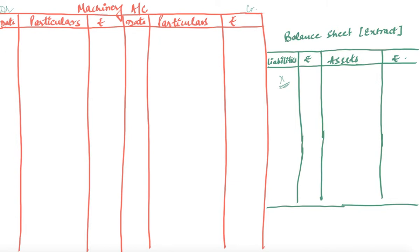Now let's start with the solution. On 1st July 2015 the first machinery was purchased, so we write: To Bank (M1), amount rupees 1 lakh. There is no other transaction in 2015.